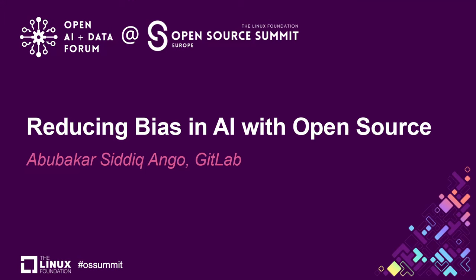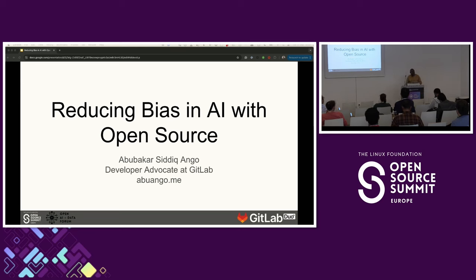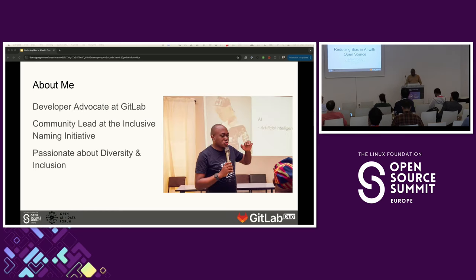Good afternoon, everyone. Thank you very much for joining me. I'm Abubakar Siddiq Ango. I'll be talking about how open source can help us to reduce bias in AI. This is a bit of a further session, and at some point I'll open up for us to have some conversation about some of the things I've shared and suggestions you might have. A little bit about me: I'm a developer advocate at GitLab, I'm also a community lead for the Inclusive Naming Initiative, and I'm passionate about diversity and inclusion.